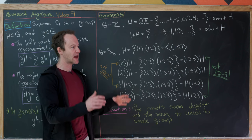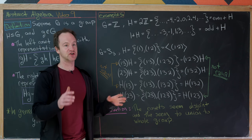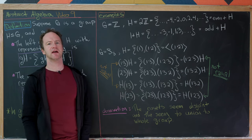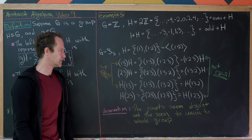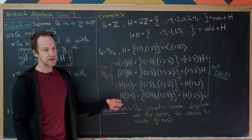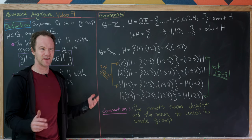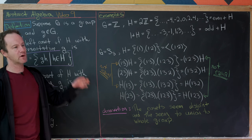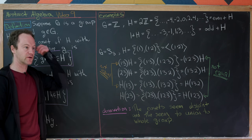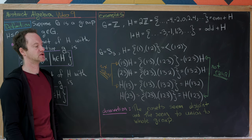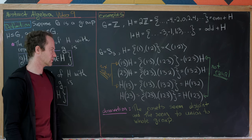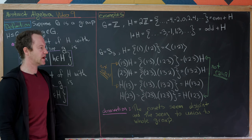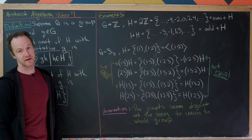This look at cosets is really a generalization of breaking groups into even and odd parts, but we may have more than just two parts. In the integers, you can think of it like congruence mod n, but we want to push it further than the integers to general groups.